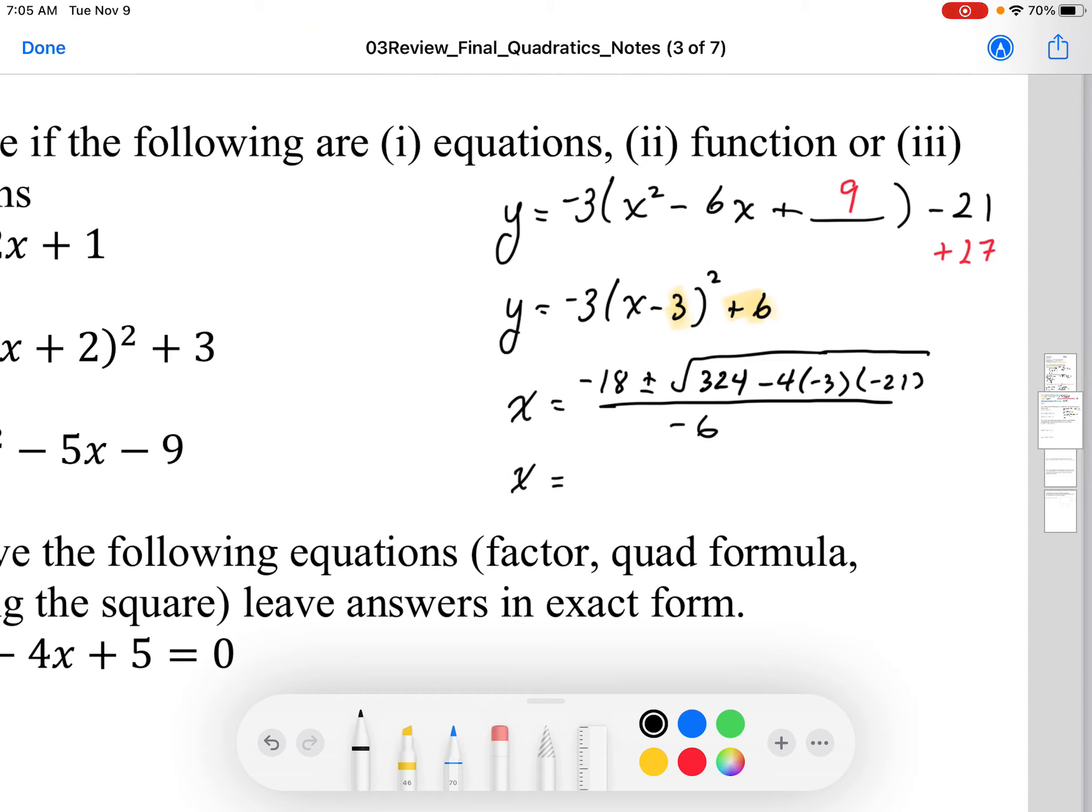So we get x = -18 ± √(4 × -3 × -21). That's going to give us 256. Sorry, 252. So we do 324 - 252, and that's going to give us 72 in the square root. So it becomes √72, and that's all over -6.